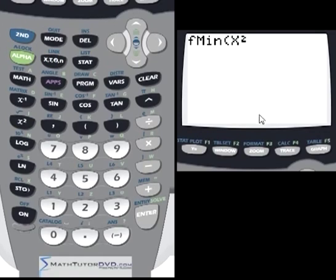So there should be a minimum value right here in the center of the screen. You have to put your function in first, then a comma, and then the variable that you're searching along, which is x.